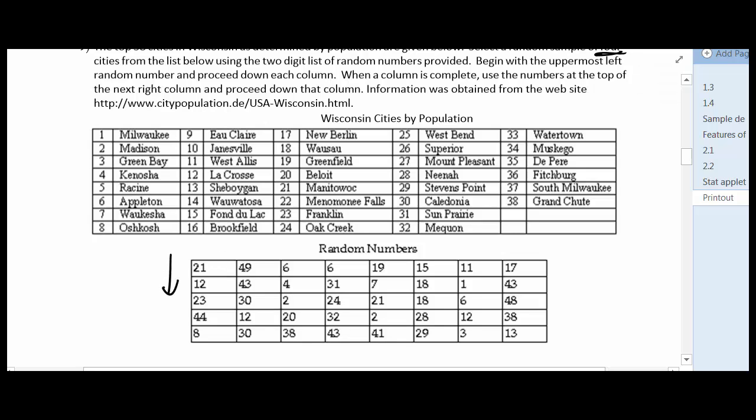But if I go down, I see 21 is my first number. And 21 corresponds to Mantle Walk. Then I got 12, and 12 corresponds to Lacrosse. Then I have 23 corresponds to Franklin. Then I have 44. Now, 44 is outside of my sampling frame. So I'm not going to use it. 8 would be my next one, and 8 corresponds to Oshkosh. So those four cities would be my sample using this particular random digit table.